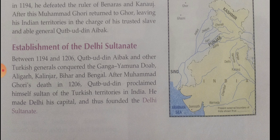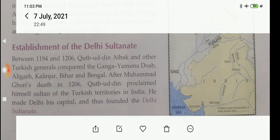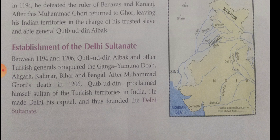Sikandar Lodhi, the most successful Lodhi ruler, founded the city of Agra. Ibrahim Lodhi, the last Lodhi ruler, was overthrown after being defeated by Babur at Panipat. With the defeat of Ibrahim Lodhi, the Lodhi dynasty and the Delhi Sultanate came to an end. Babur established the Mughal Empire in India.